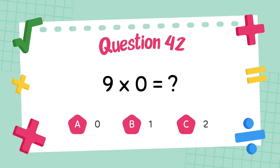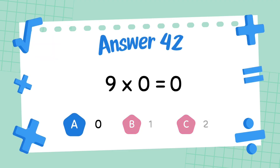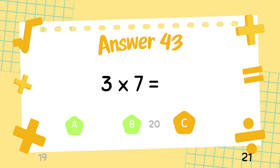What is 9 multiply 0? The answer is 0. What is 3 multiply 7? The answer is 21.